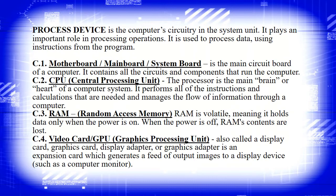RAM, or random access memory, is volatile — meaning it holds data only when the power is on, and when the power is off, RAM's contents are lost. The video card or graphics processing unit — also called a display card, graphics card, or graphics adapter — is an expansion card which generates a feed of output images to a display device such as a computer monitor. It improves the quality of images displayed on your computer.